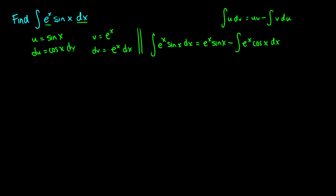What you probably noticed here is that with e to the x cosine x, it hasn't gotten any easier. We've just changed the integral from e to the x sine x into e to the x cosine x, so we're going to have to do this step yet again.